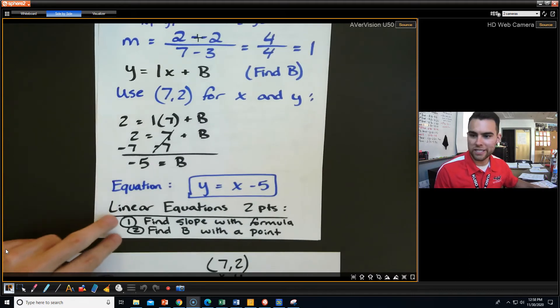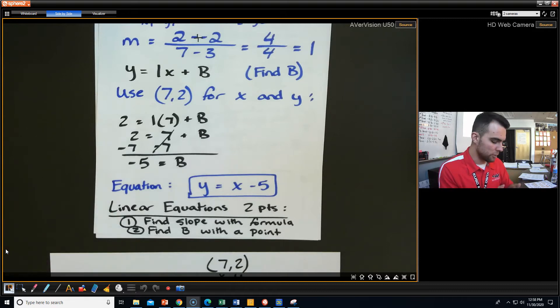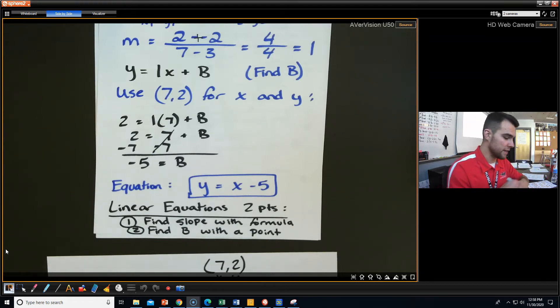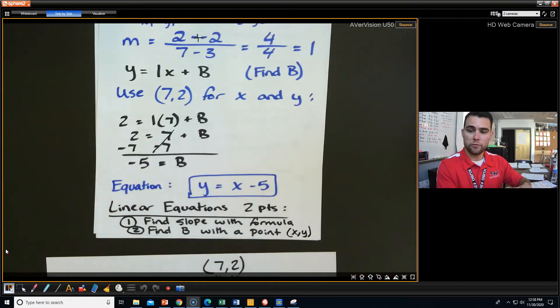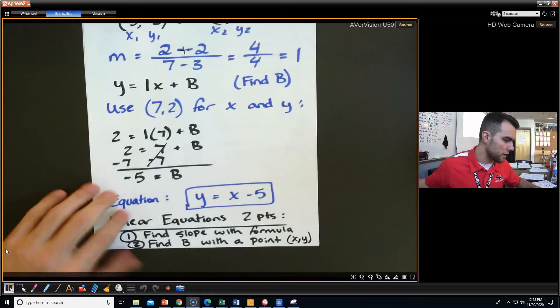So here are some of the quick steps if you need some steps, if that helps you out. Linear equations from two points. Find the slope with your slope formula, and then find the b with a point by plugging in an x, y point. And you will be sitting good if you can do those steps.